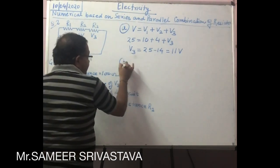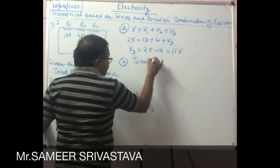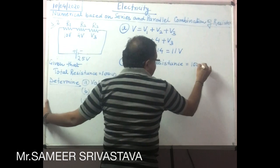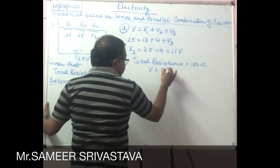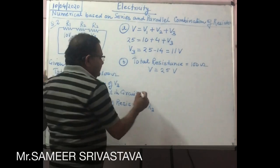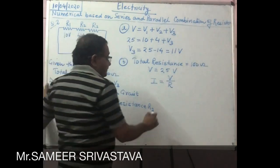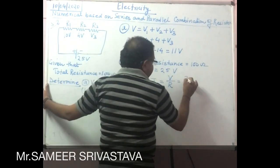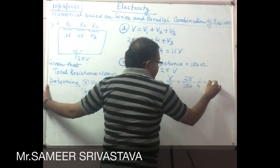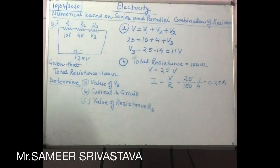For the second section, we have to find the current in the circuit. The total resistance is given as 100 ohm and total potential is 25 volt. We apply the formula I is equal to V by R: 25 upon 100 equals 1 by 4, or 0.25 ampere. The current flowing in the circuit is 0.25 ampere.